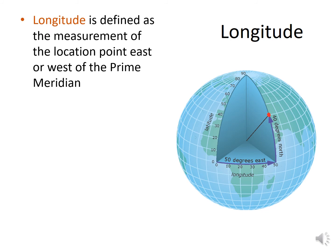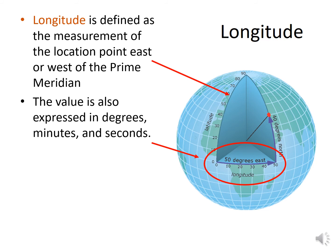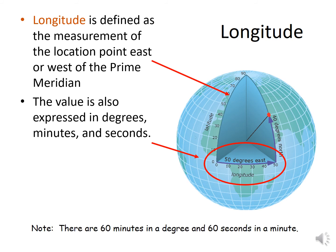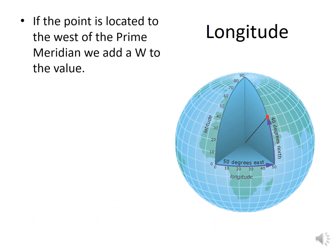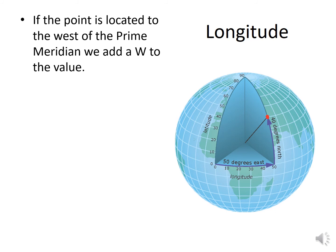Longitude is defined as the measurement of a location point east or west of the prime meridian. As you notice, I have it marked with a red dot, and the value is also expressed in degrees, minutes, and seconds. There are only 60 minutes in a degree and 60 seconds in a minute. If the point is located to the west of the prime meridian, we add a W to the value.